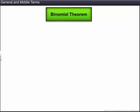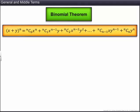Let's recall the binomial theorem. The expansion of a binomial x plus y with a positive integral index n is equal to nC0 x raised to the power n plus nC1 x raised to the power n minus 1 into y plus and so on. The last term being nCn y raised to the power n.